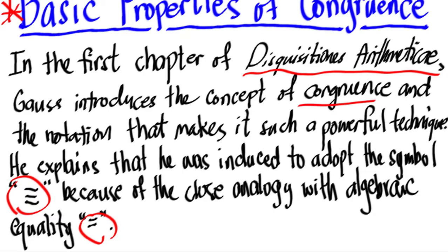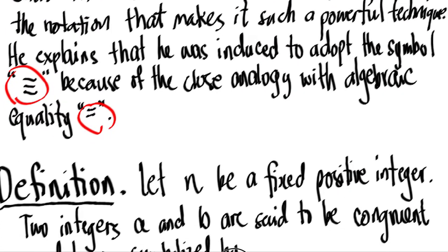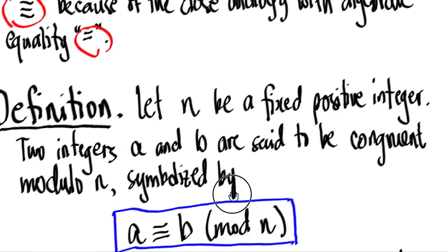According to Gauss, if a number n measures the difference between two numbers a and b, then a and b are said to be congruent with respect to modulo n. If not, we call a and b incongruent. Let's put this in a formal mathematical definition.